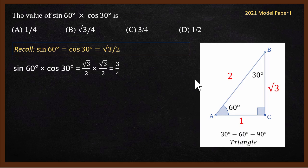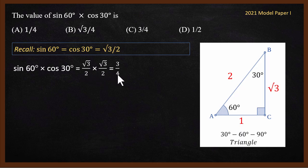Substituting and solving: root 3 by 2 multiplied by root 3 by 2 equals root 3 squared over 4, which is 3 by 4. So the answer is C, which is 3 by 4.